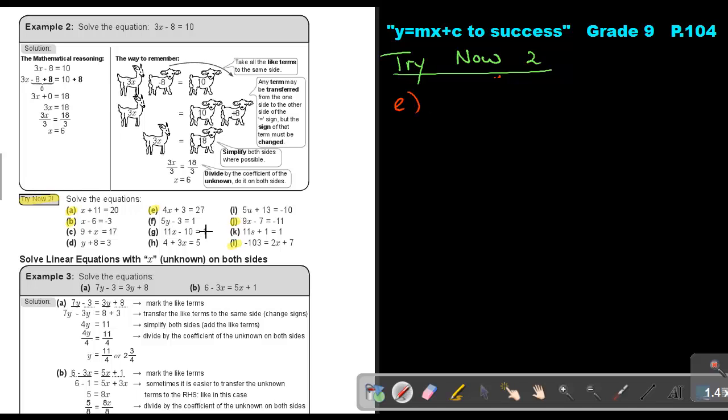So if I look at number E, it is 4X plus 3 equals 27. Now again, this is like, like, like. Get the like terms on the same side. So this one, if it jumps over, it becomes a negative. So we have 4X, 27 minus 3. What will that be? 24. Then I'm just going to divide by 4 and I divide by 4 on both sides. And the value of X will be equal to 6.